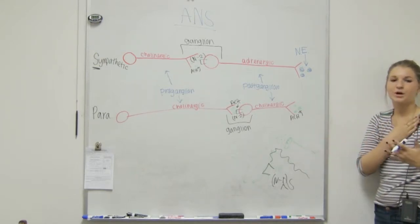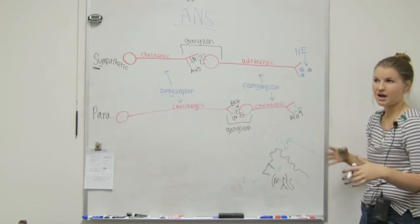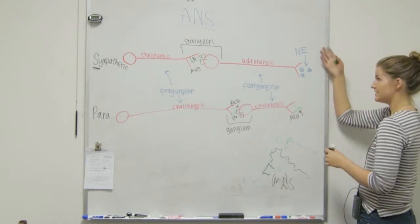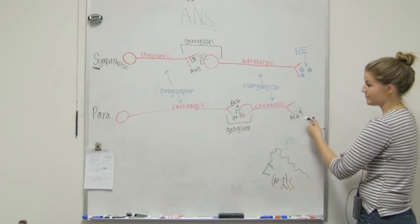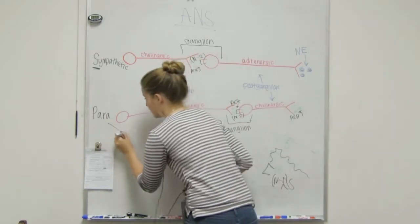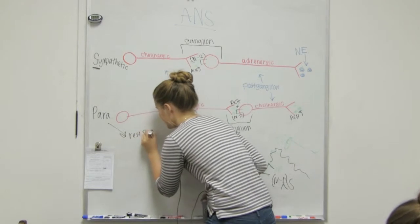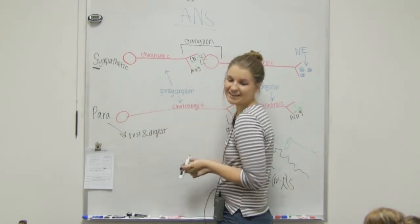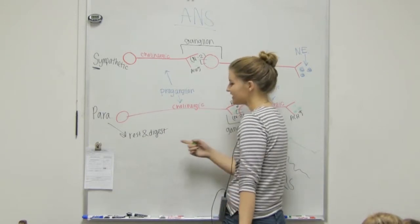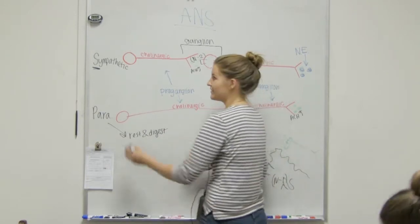So, whether it's going to our heart, or our lungs, or our eyes, or our stomach, these are all going to be effectors. So, for parasympathetic, we call this our rest and digest. So, it's like right now, we had lunch, we're kind of tired, just figuring out how to digest our food.